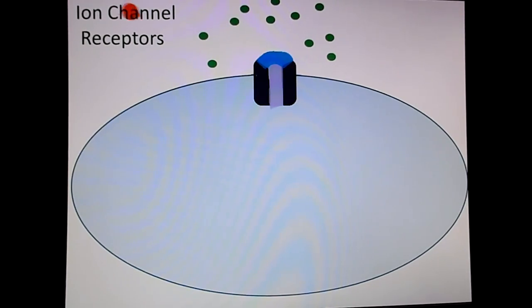Now, if a signaling molecule comes and attaches to this ion channel receptor, it acts as a ligand, because remember ligands are molecules that attach to larger ones. So this is a ligand-gated ion channel.